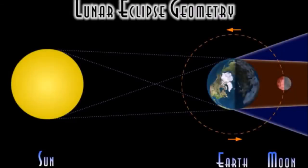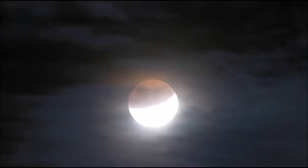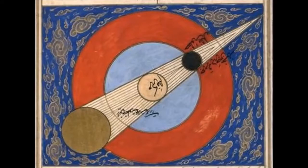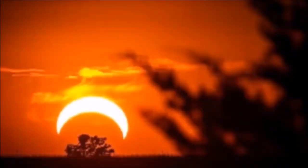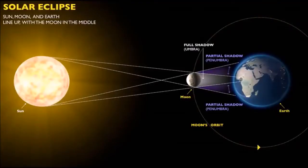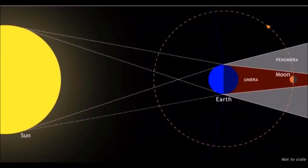Skeptics like to use eclipses as proof of a globular Earth, because of the round shadow cast upon the lunar surface. They claim the Sun, Earth, and Moon align in a perfect 180-degree syzygy, with the Sun casting Earth's shadow on the Moon. The problem is that over 50 times in the past 2,000 years there have been lunar eclipses where the Sun is still visible in the sky as the shadow is being cast upon the Moon. This makes their theory impossible, because the Sun would need to be behind the ball Earth in a straight line.